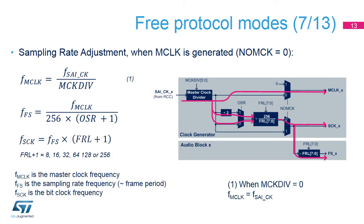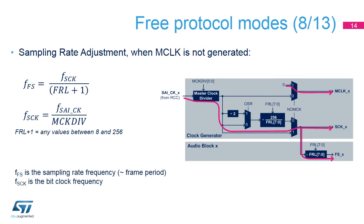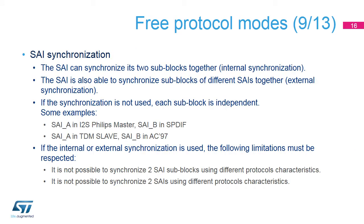The clock generator is needed for master mode communications. It is used to adjust the sampling rate of the serial audio interface. The clock generator provides the root frequency for the MCLK, SCK, and FS. When the master clock, or MCLK, is generated, the frame length must be a power of 2. The ratio between the FS frequency and the MCLK frequency is set to 256 or 512, according to the OSR bit. The clock SAI-CK is provided by the STM32H7's RCC block. When the MCLK is not generated, the frame length can take any value from 8 to 256. In this case, the frequency of the SCK bit clock is directly given by the clock received on the SAI-CK input, divided by the MCK div value.